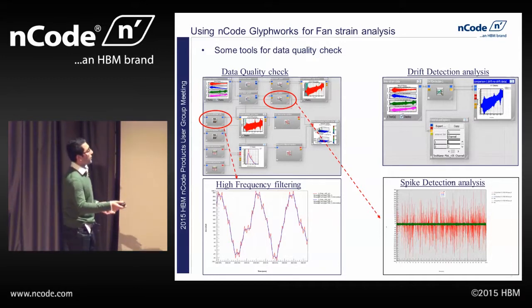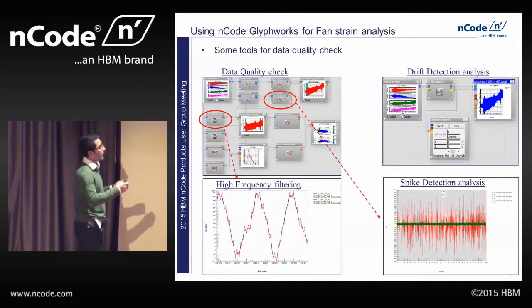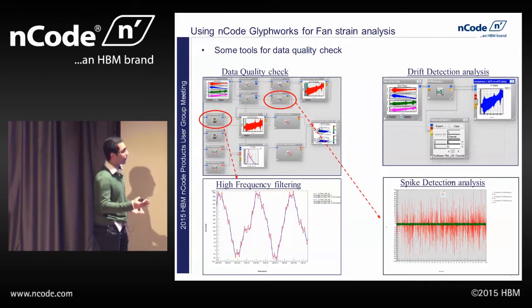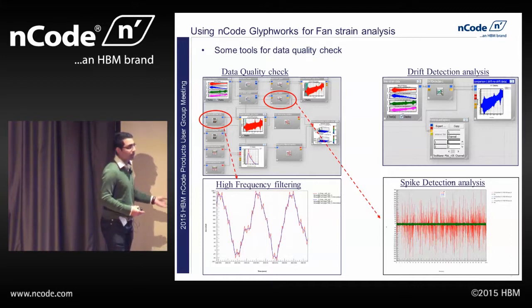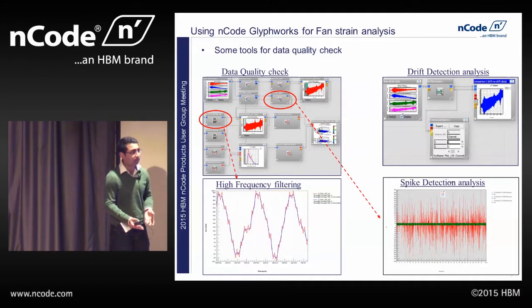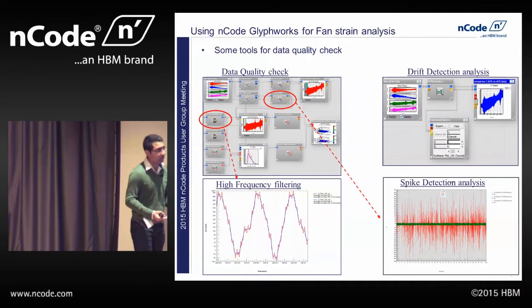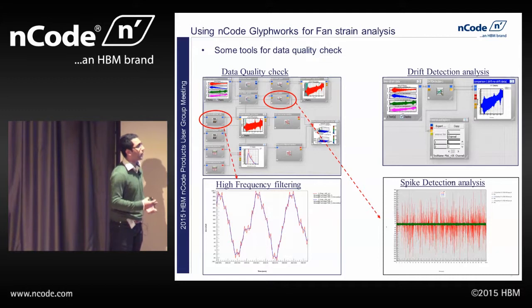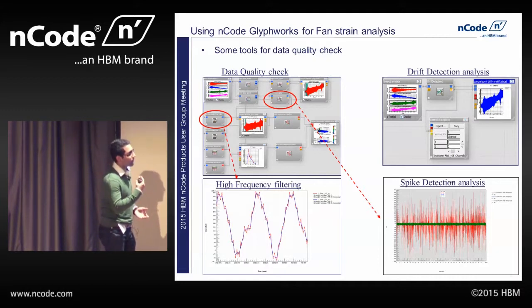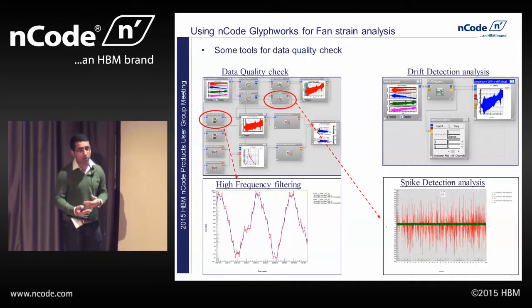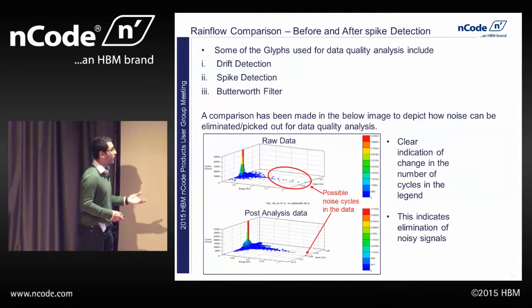The nCode part is divided into three parts: the data quality check, the frequency analysis, and the fatigue analysis. In the data quality check, we eliminate high frequency data using the Butterworth filter. If the fan strain analysis is not in a test cell and we're taking road data, we end up detecting a lot of noise — that's where we use the spike detection tool to eliminate noise. The drift detection tool is essentially to check if the glue comes off or the glue relaxation hasn't happened, or if we see that the strains coming out of the strain gauge exponentially increase. That drift detection tool helps us understand if something's wrong with the bonding of the strain gauges on the blade.